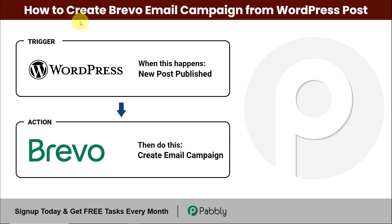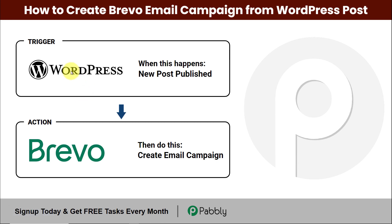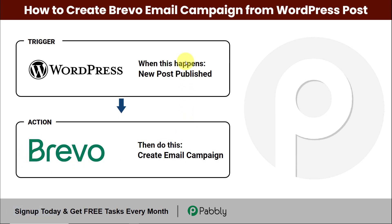Hello and welcome to Pabbly. In this video we are going to understand how to create a Brevo email campaign from a WordPress post. Every time a new post is published on WordPress, automatically an email campaign should be created in Brevo, which is an email marketing tool. To do this we'll integrate these two applications using Pabbly Connect, where the trigger will be WordPress and the action application will be Brevo. Let's begin.